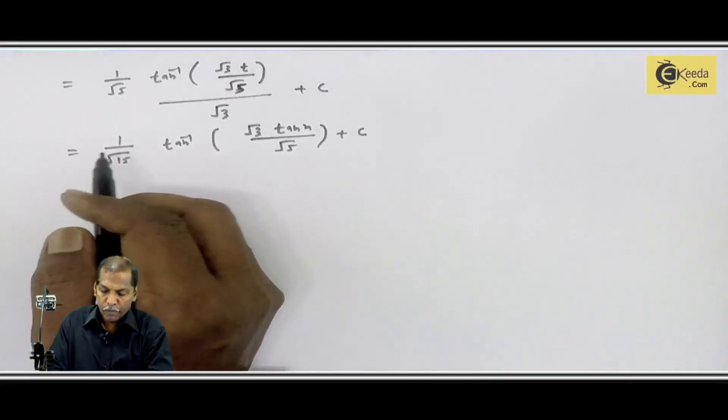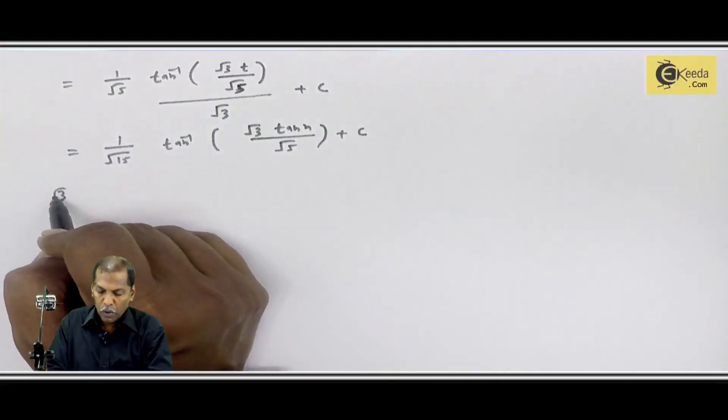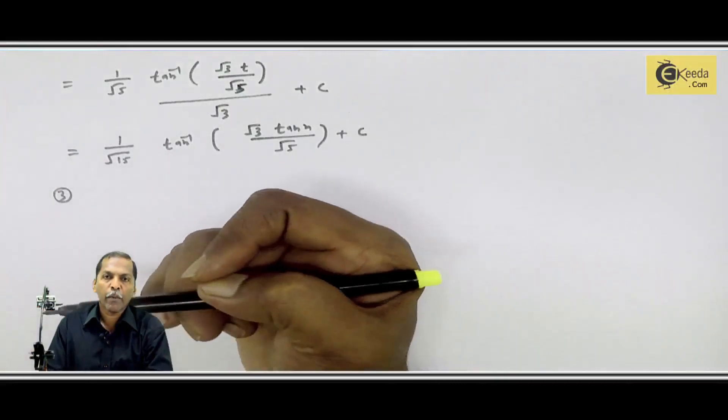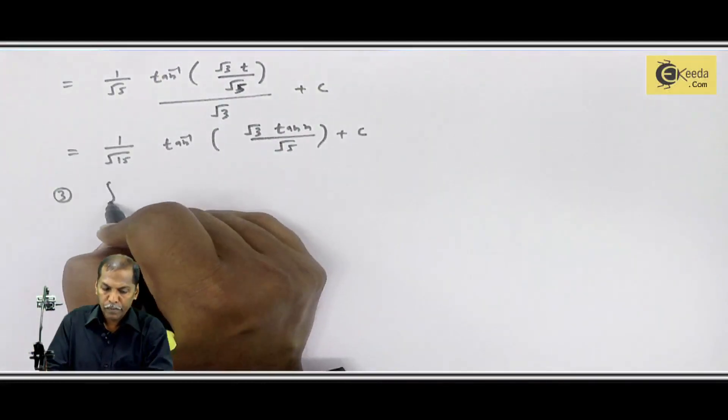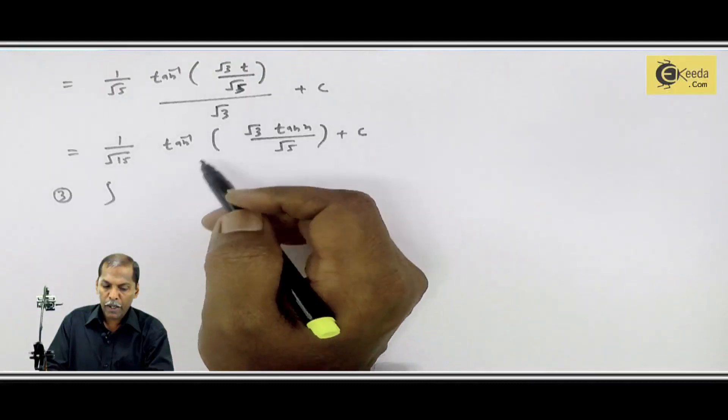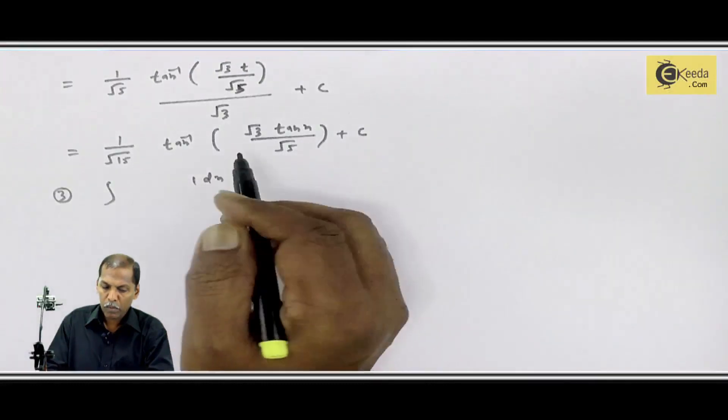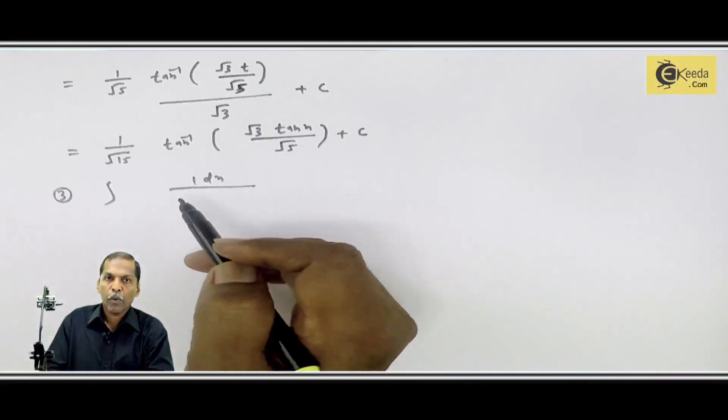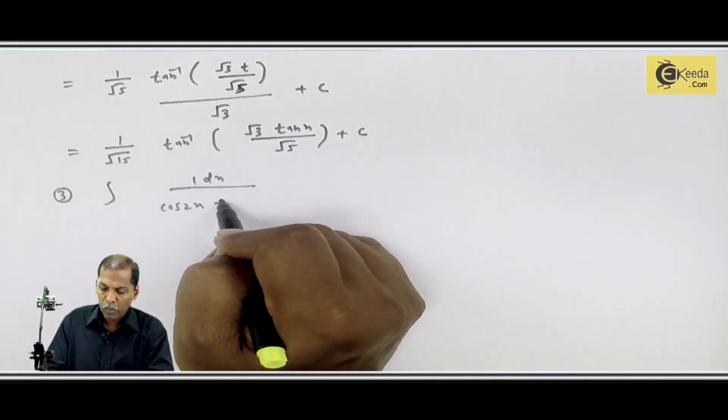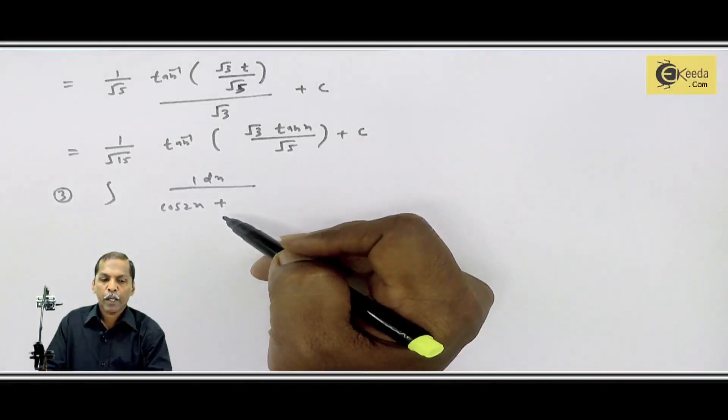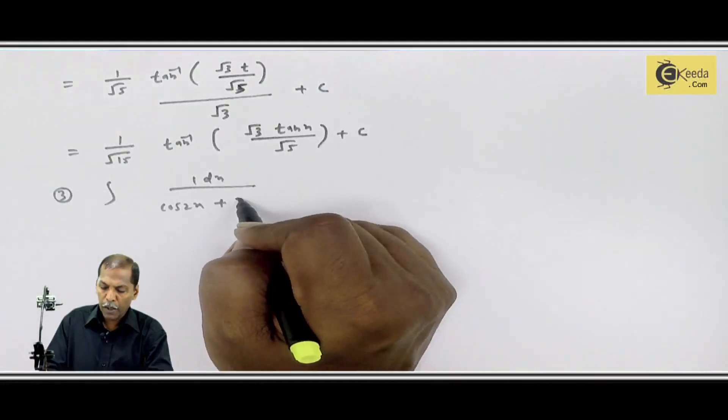Question number three related to same type integral: 1dx upon cos of 2x plus 3 sin square x.